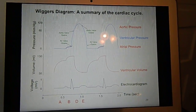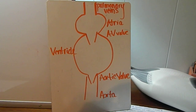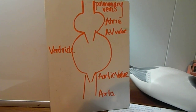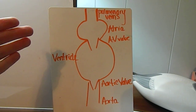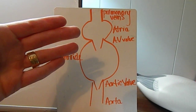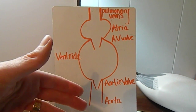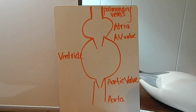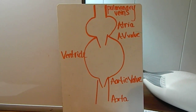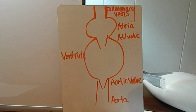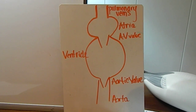The first picture you need to know how to draw is a simplistic representation of the blood flow through the heart. Pulmonary veins into the atria, AV valve into the ventricles, aortic valve into the aorta. We're going to interpret the Wiggers Diagram just focusing on the left side of the heart, because the same events happen on both sides, just with different pressures.